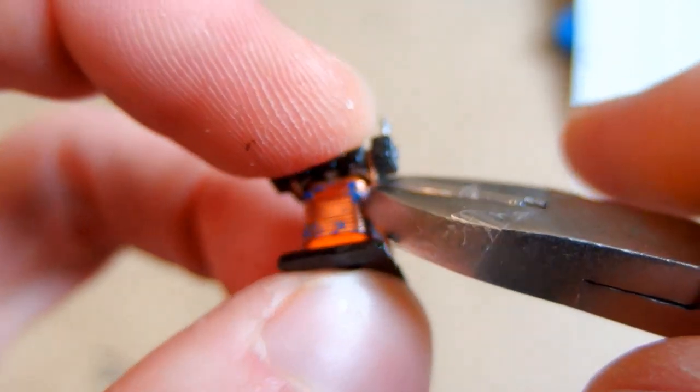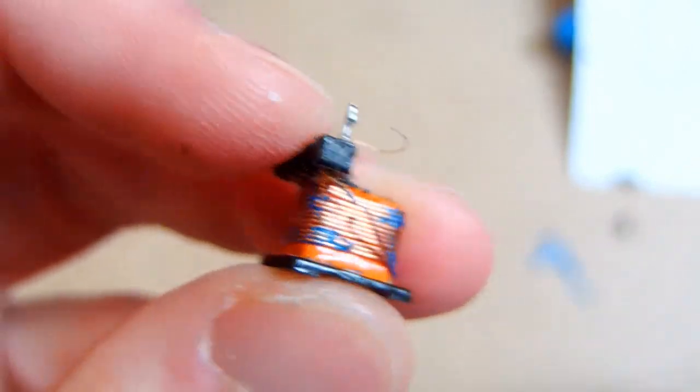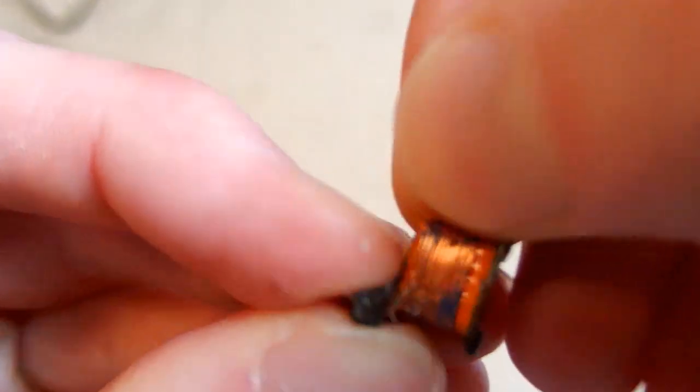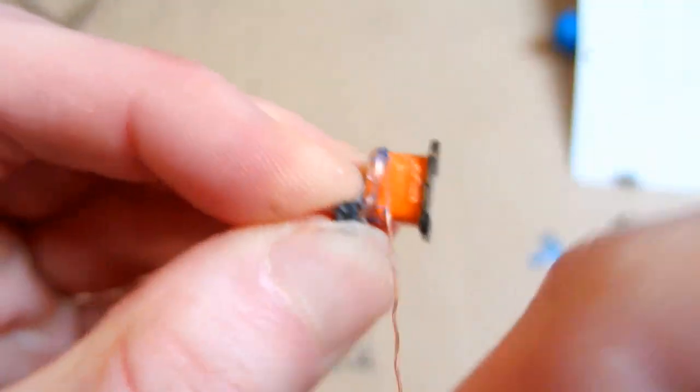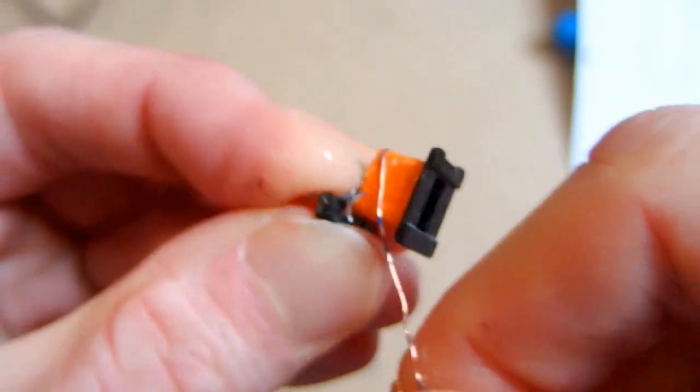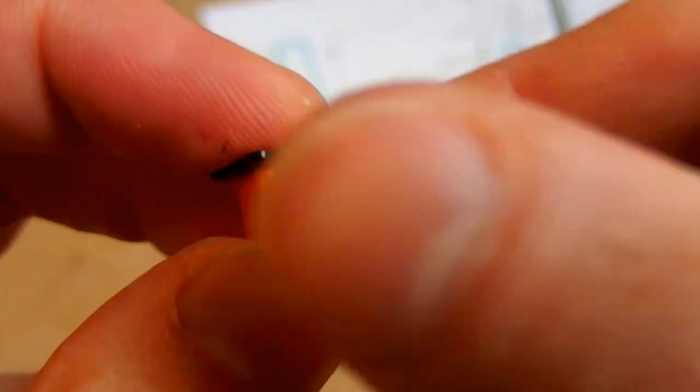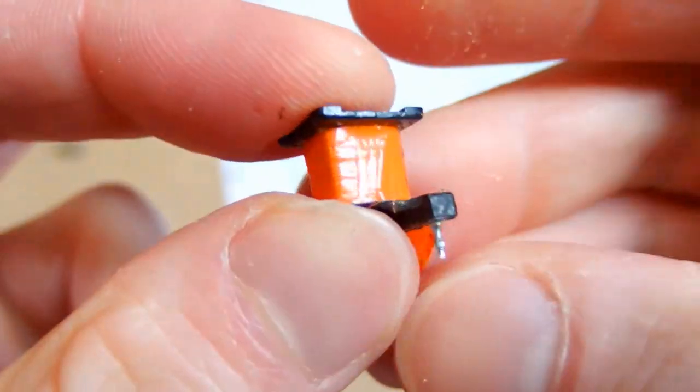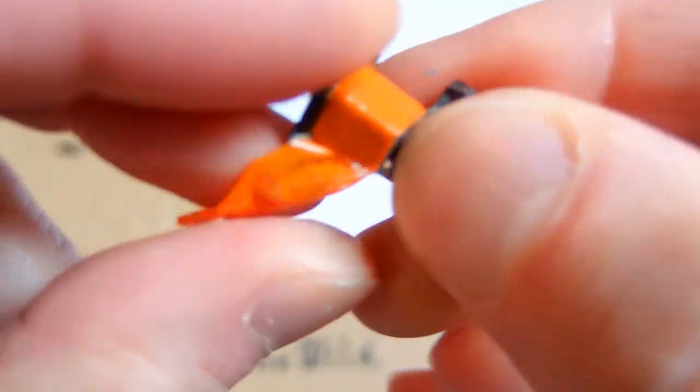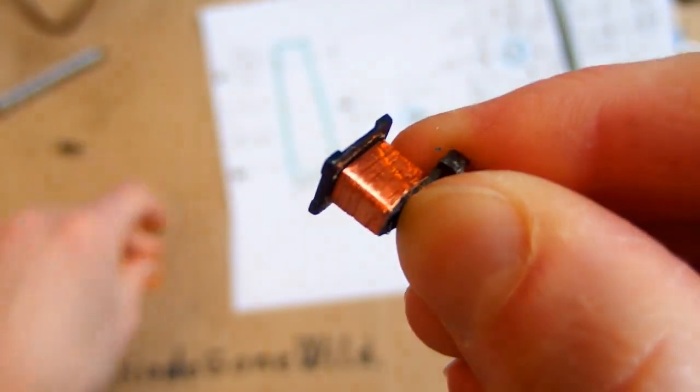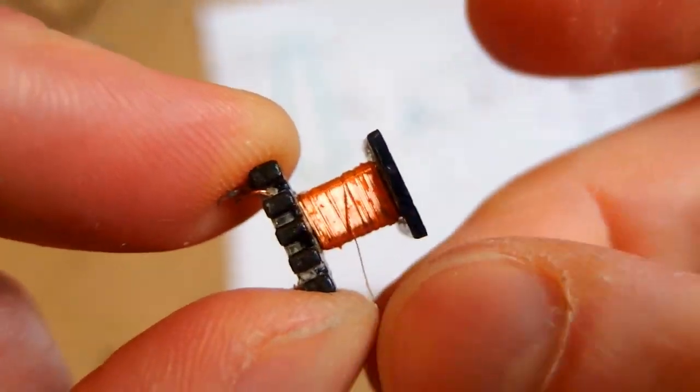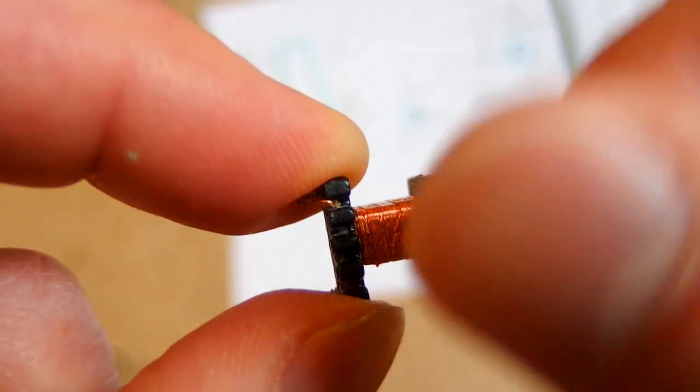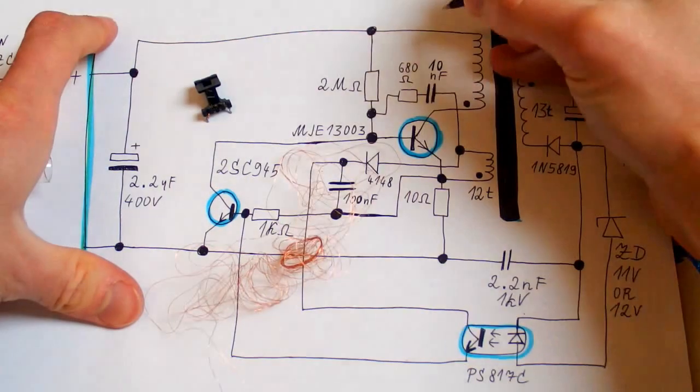Now let's remove the secondary from it. It has 1, 2, 3, 4, 5, 6, 7, 8, 9, 10, 11, 12, 13 turns. There is another isolation. One layer, two layers of it and the primary. Here you can see the primary which has 180 turns. And somebody was asking about the diameters of the wires. So let's try to measure it using this tool.